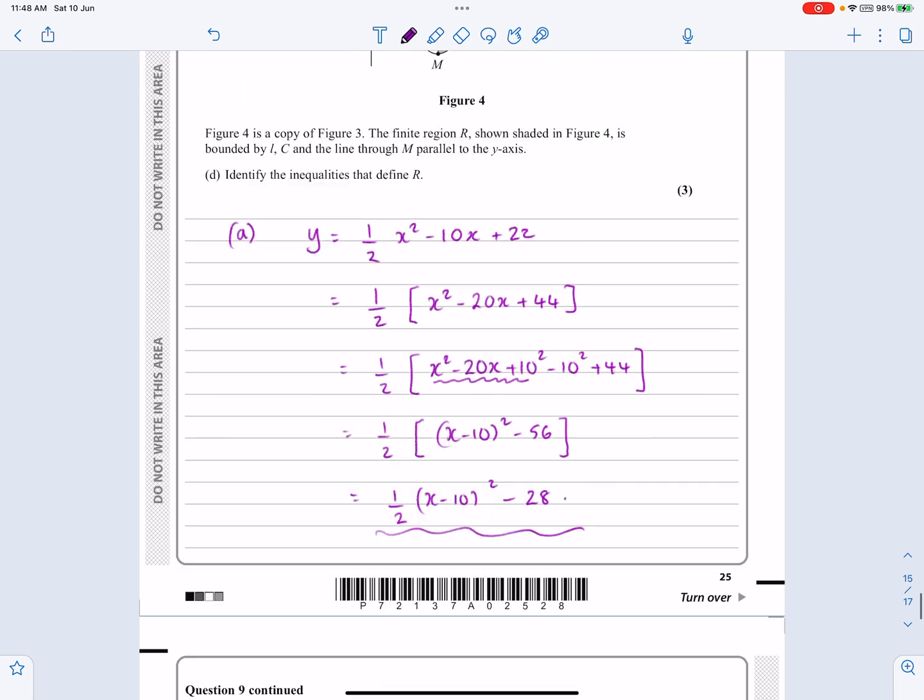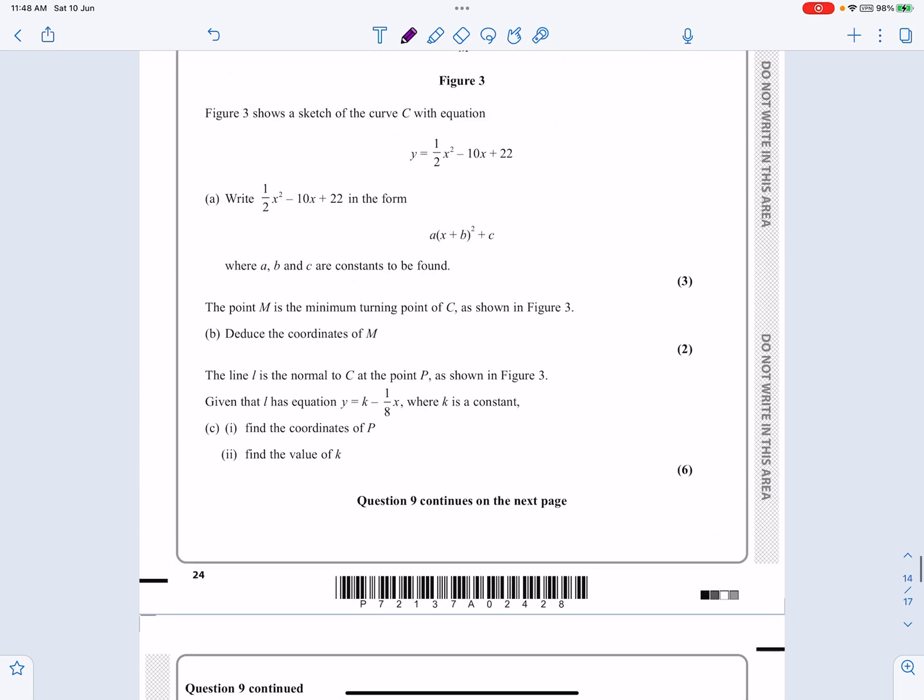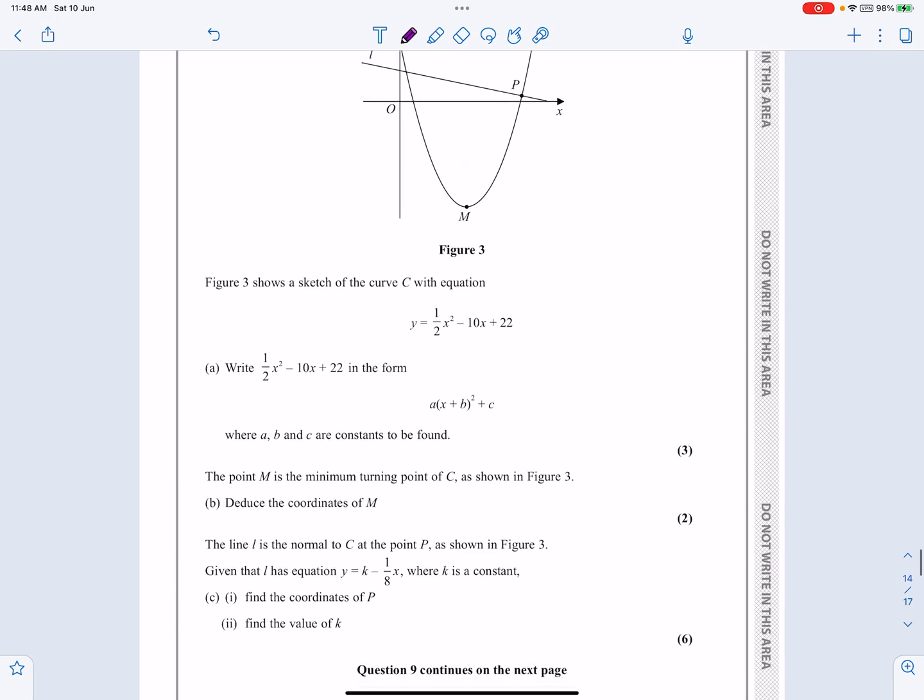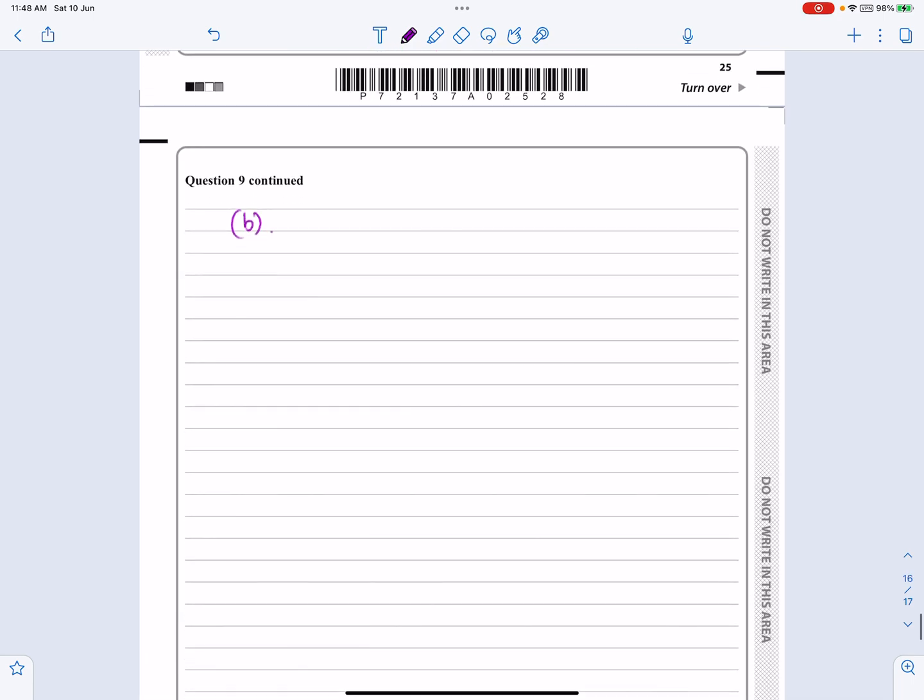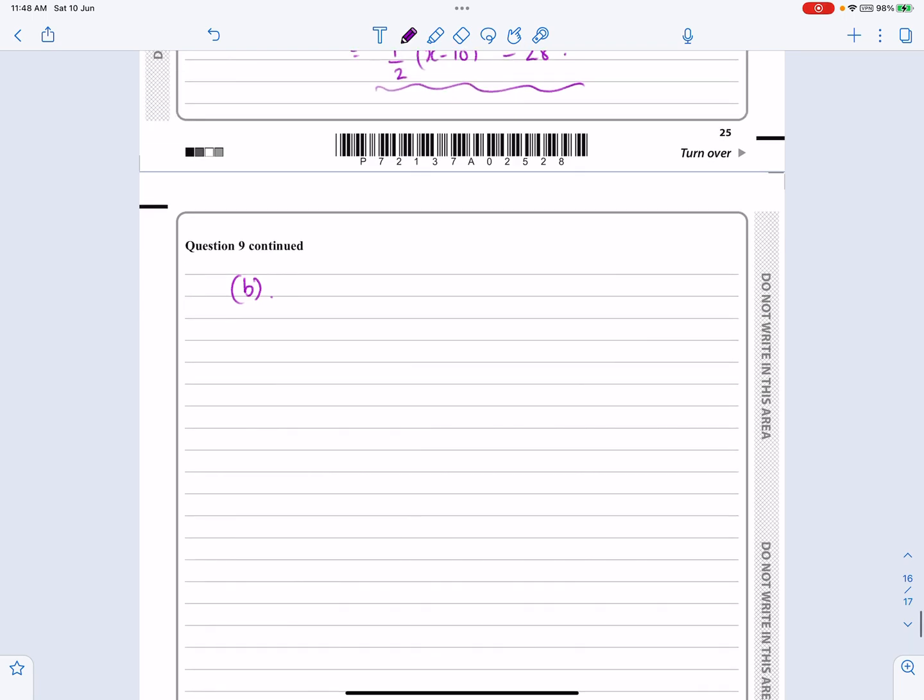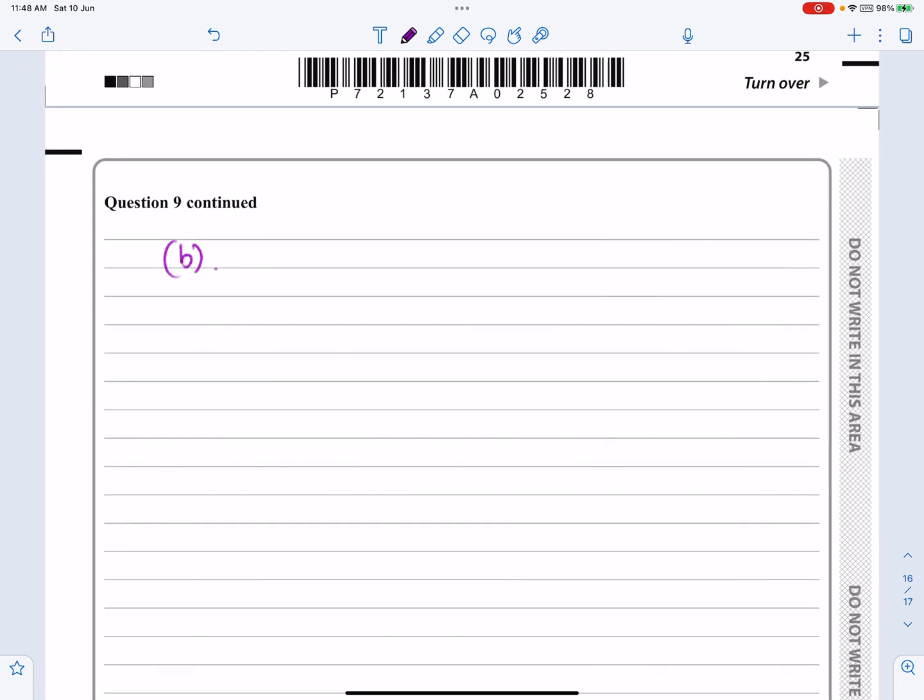Part B then says, sorry about keep jumping up and down. Part B says, M is the minimum point. Yeah, I can see that. Can we find the coordinates of M? So you could have just differentiated. But because we've done all this work on completing the square, we may as well use that to do it.